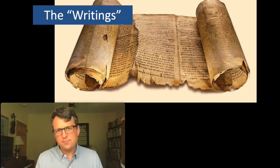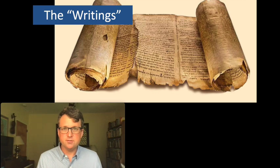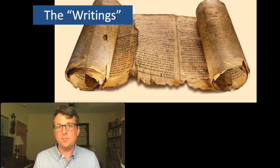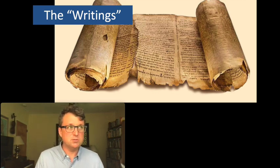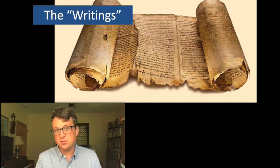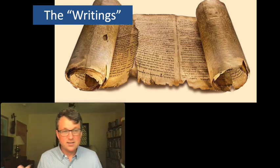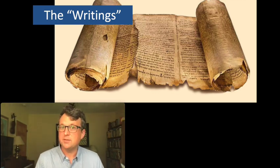There are three different groups in that list. The first being the Torah, and in Judaism that's the most essential, most sacred part of the Bible. It's the part that God speaks through the clearest — the books of Moses: Genesis, Exodus, Leviticus, Numbers, and Deuteronomy. So the Torah is God's main instruction book, the core of the Bible.